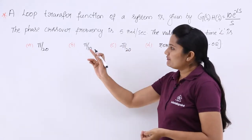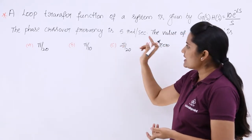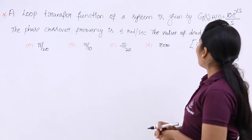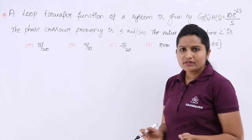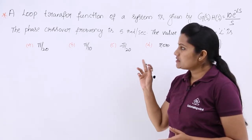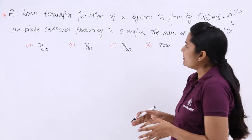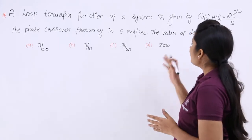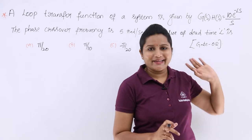For this, the phase crossover frequency is also given as phi radians per second. The value of dead time L is what we need to find out. So we need to find the value of L.